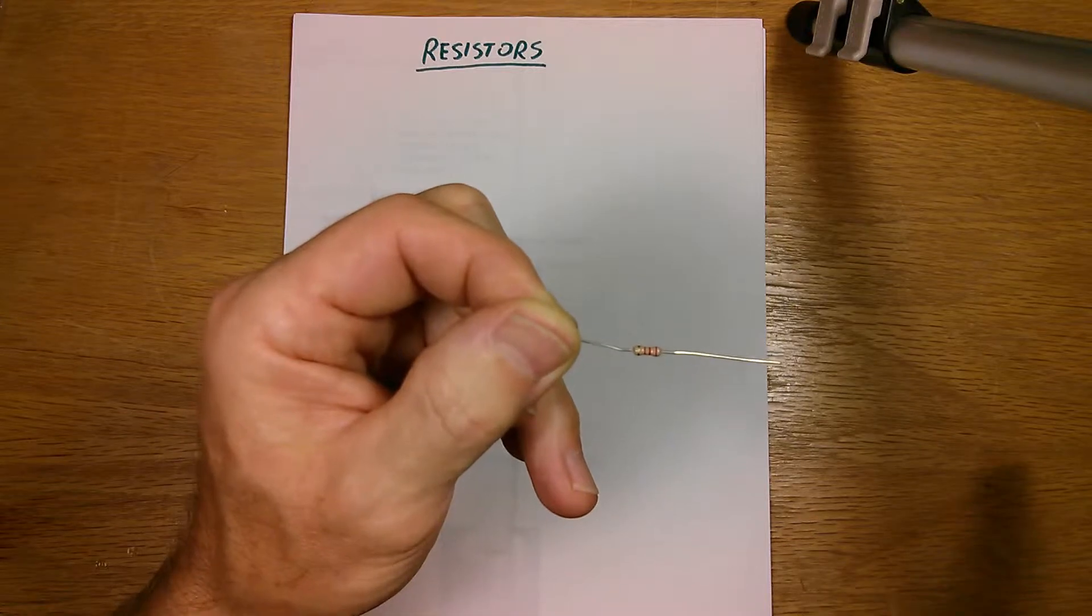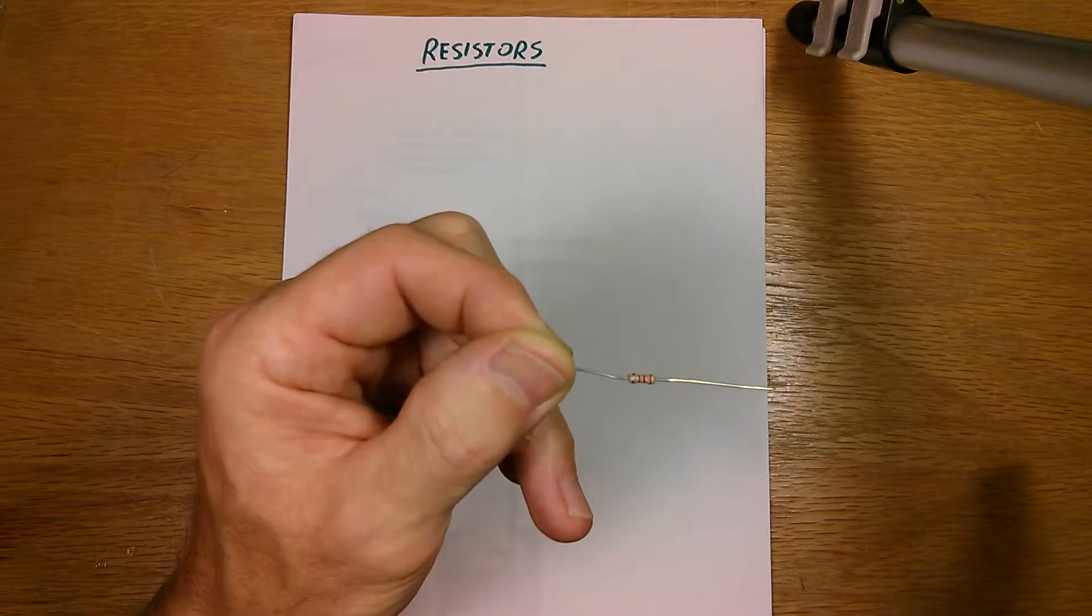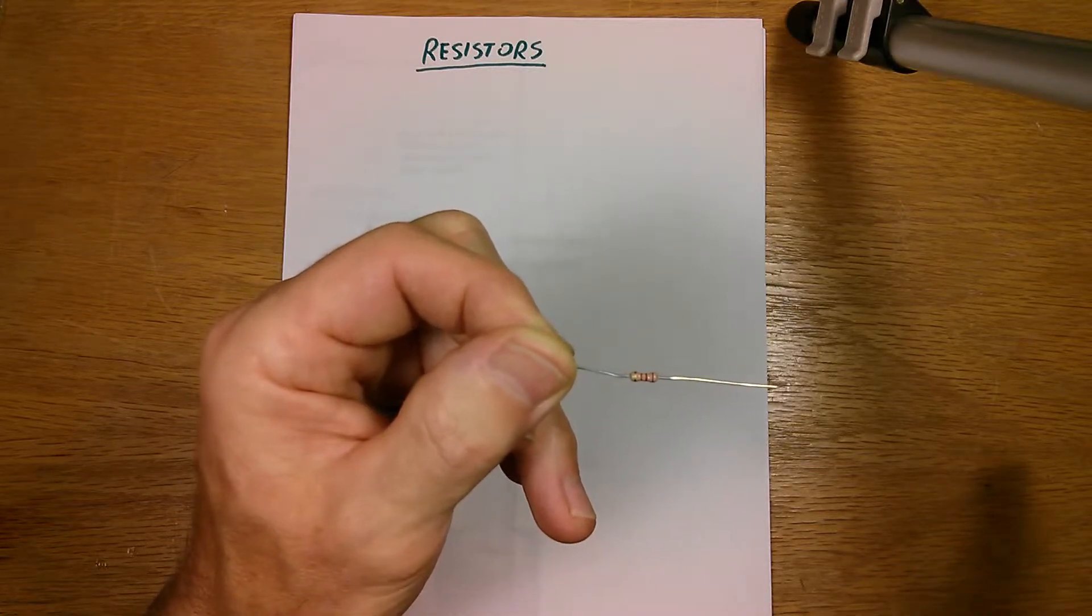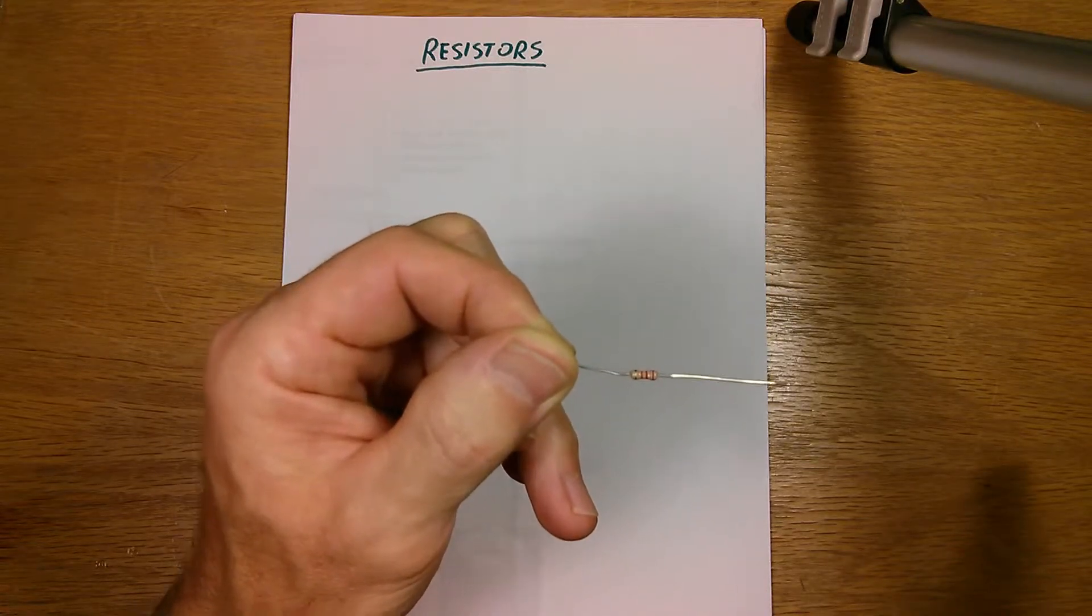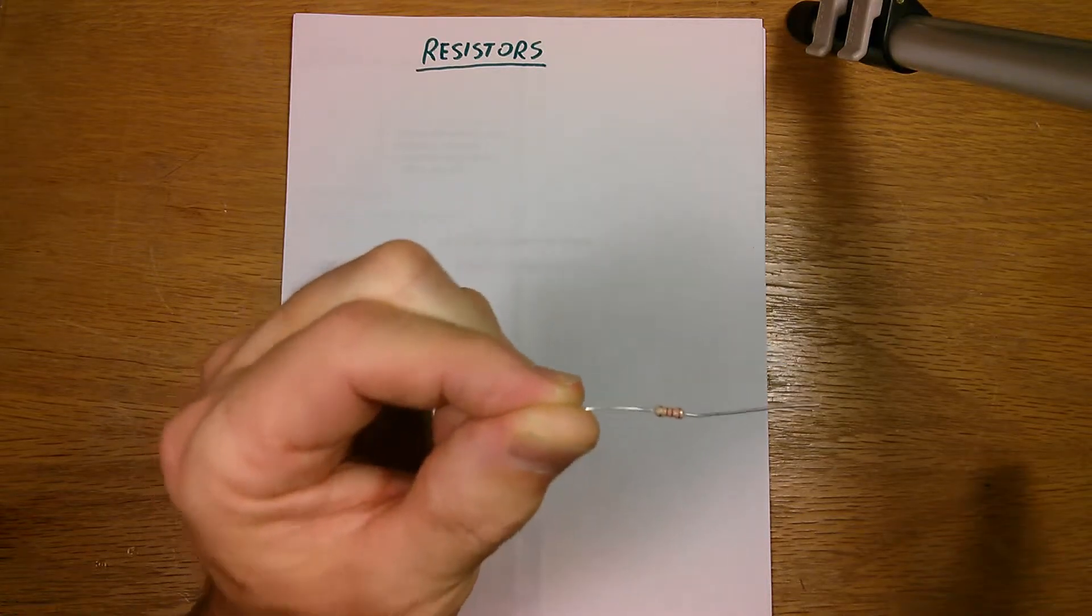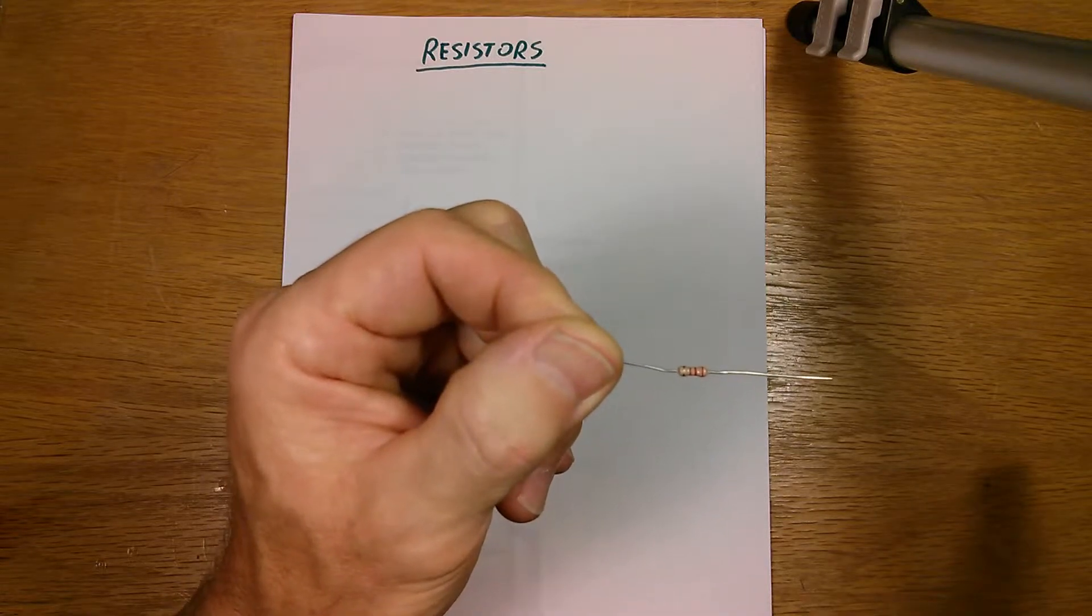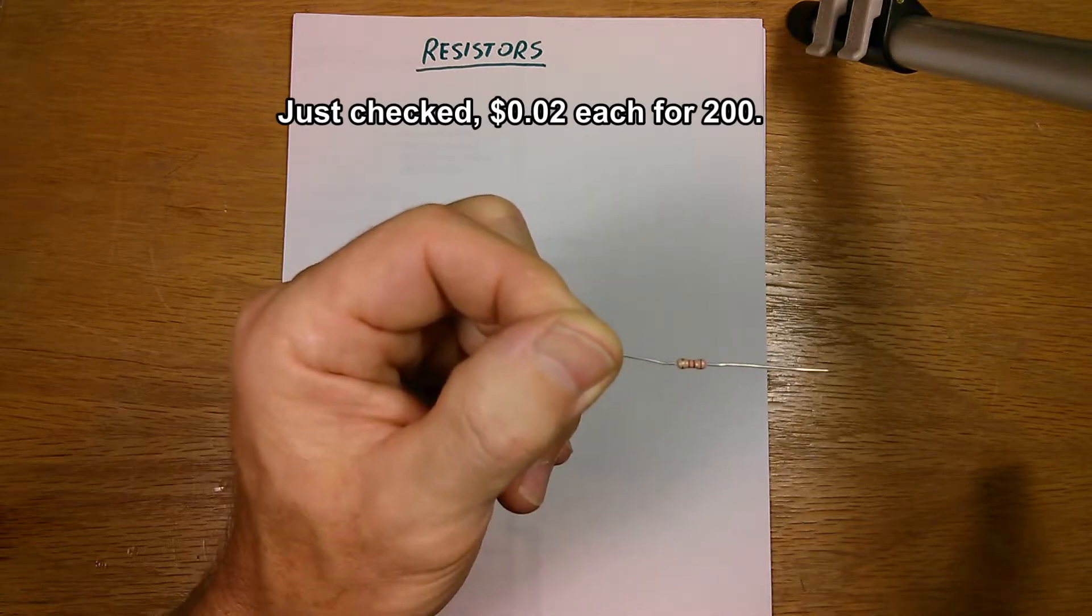And this one here, 2.2K, so it means that it's going to be 2.2K plus or minus 5%. And most likely it's not even going to be as far away from 2.2K as 5%. These are pretty good. And they're cheap. You can buy them say 100 at a time for less than 10 cents each in a package.